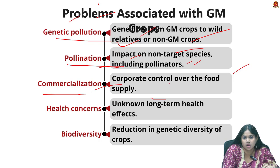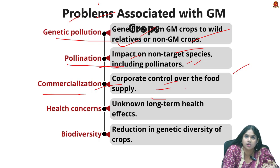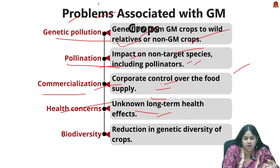Next is commercialization — the development and commercialization of GM crops are often controlled by a few large corporations, leading to concerns about corporate control over the food supply and concentration of power in the agricultural industry. Next is health concerns — GM foods could have unknown long-term health effects, such as triggering allergies or transferring antibiotic-resistant genes to humans.